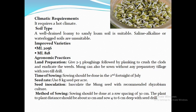Method of Sowing: Sowing should be done at a row spacing of 30 cm. The plant-to-plant distance should be about 10 cm, and sow 4 to 6 cm deep. For getting higher yield, adopt a bi-directional method of sowing — sow the crop in both directions at 30 cm row spacing using half the seed rate in each direction.